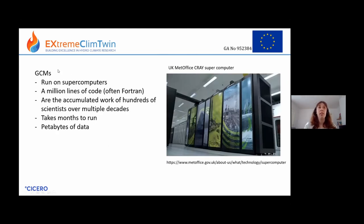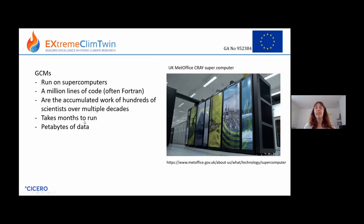The models are run on supercomputers — this is a picture of the UK Met Office Cray supercomputer. The models themselves are like a million lines of code, often in FORTRAN or C/C++. A lot of work goes into climate models — the accumulated work of hundreds of scientists over multiple decades. It can take months to run a climate model, depending on the resolution and how complex it is, and they generate a lot of data which you then have to store somewhere.